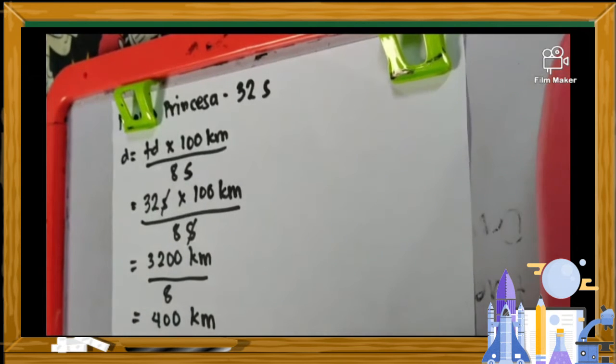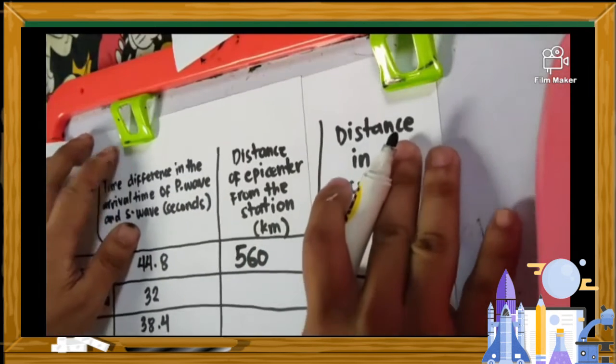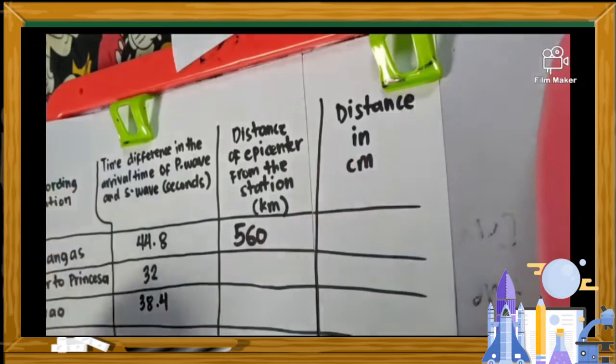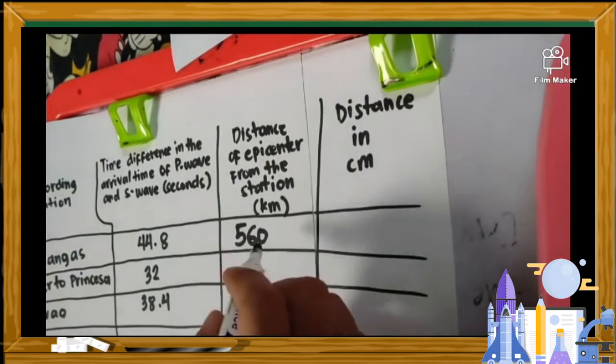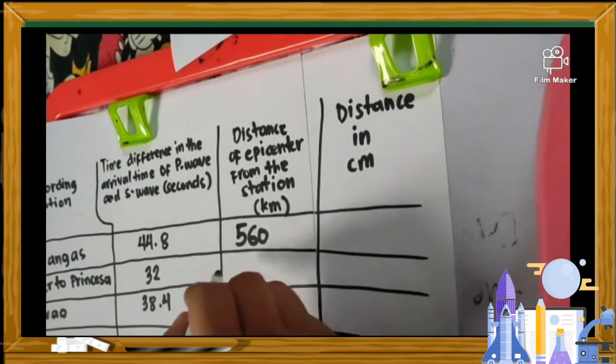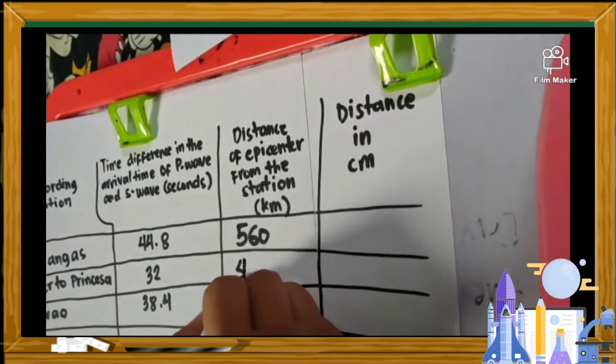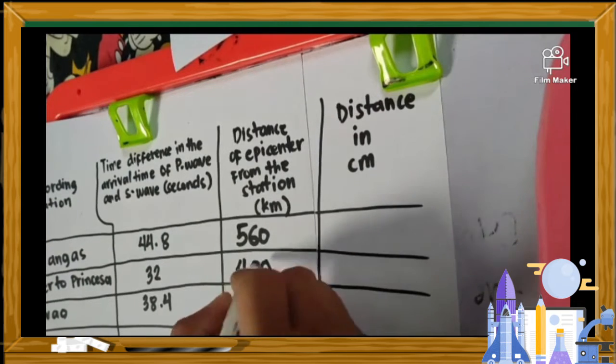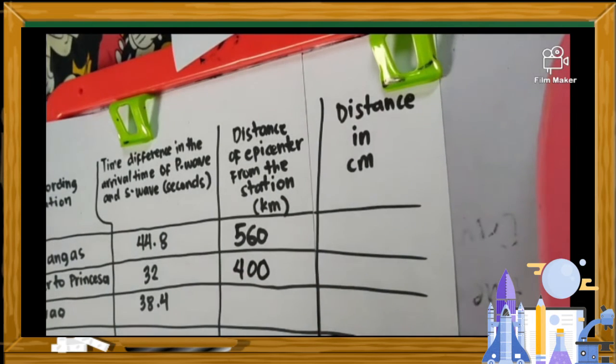We'll place that in the table. We have 400 kilometers for Puerto Princesa.